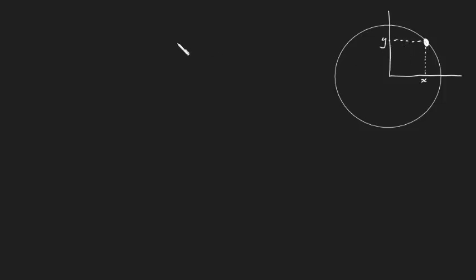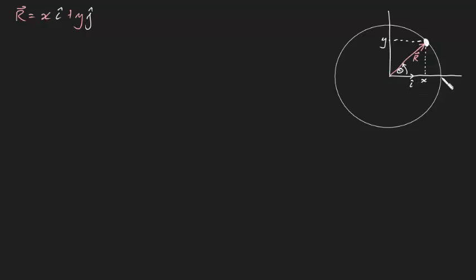Let's define its position at any time t. Let's say that we create an axis centered at the origin of the circle, and at any time t it has a position x in the horizontal and a position y from the vertical. We can also define a position vector — let's call that capital R — and at any particular time the angular displacement from this axis is theta. R, our position vector, can be written as x times our i unit vector plus y times our j unit vector, where i and j are just unit vectors along the x-axis and the y-axis respectively.